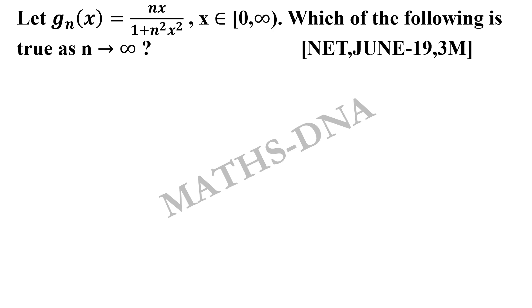Moving on to the question, the question is: let g_n(x) equals nx upon 1 plus n square x square, where x belongs to closed 0 to open infinity. Then which of the following is true as n tends to infinity?